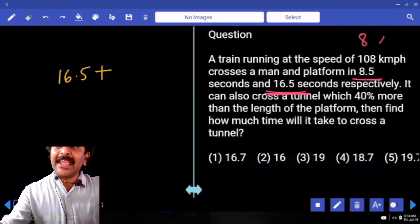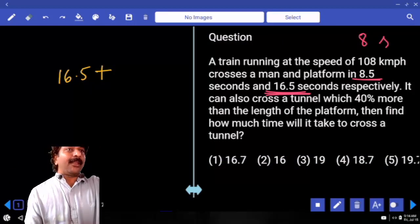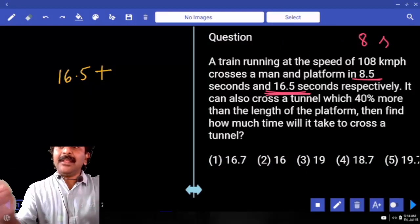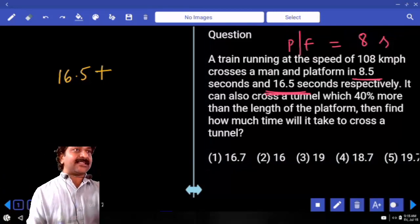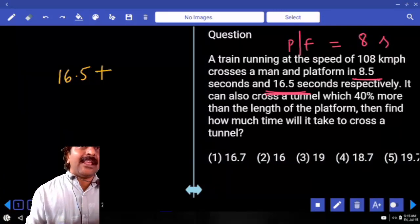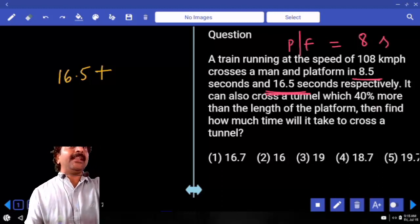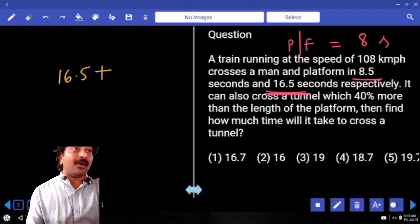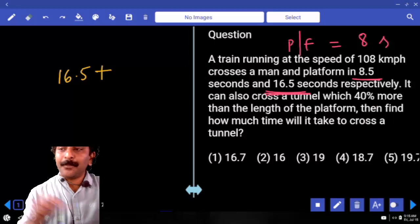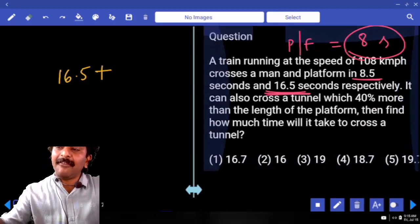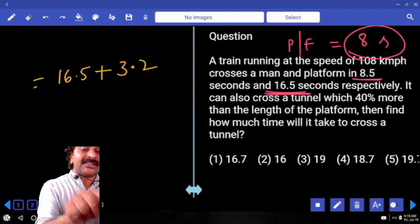Why is it taking 8 seconds extra? Because platform length got increased. That means to cross the platform, it is taking 8 seconds. Now the tunnel length is 40% more than the platform length. It takes 40% more time than it takes to cross the platform. 40% of 8 seconds is 3.2. Answer: 19.2 seconds.